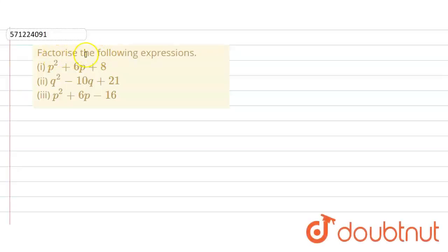In the given question, we have to factorize the following expressions. The first algebraic expression is p² + 6p + 8.